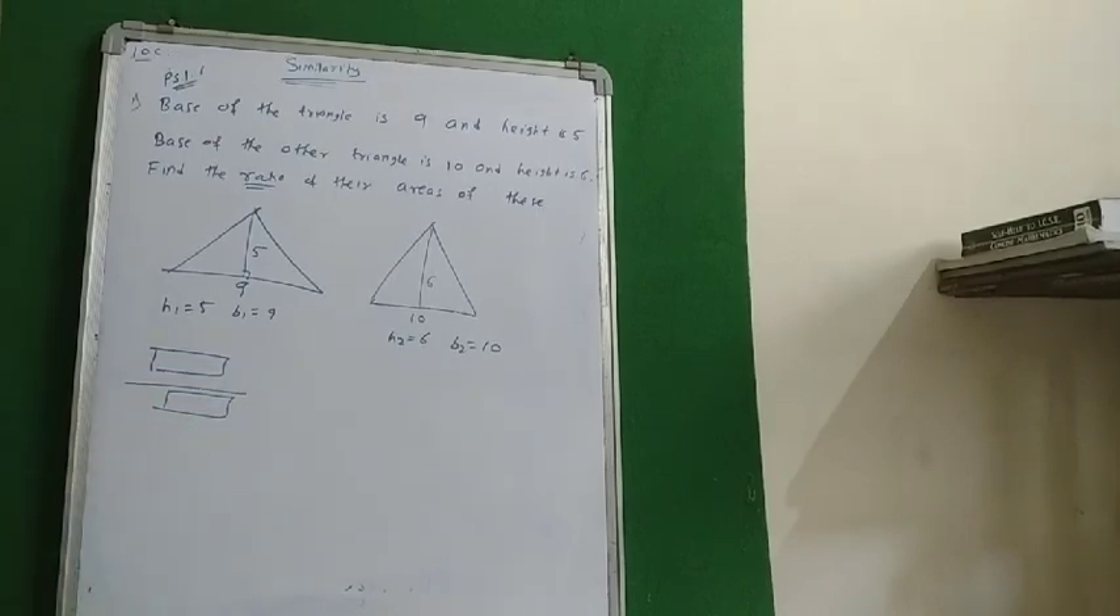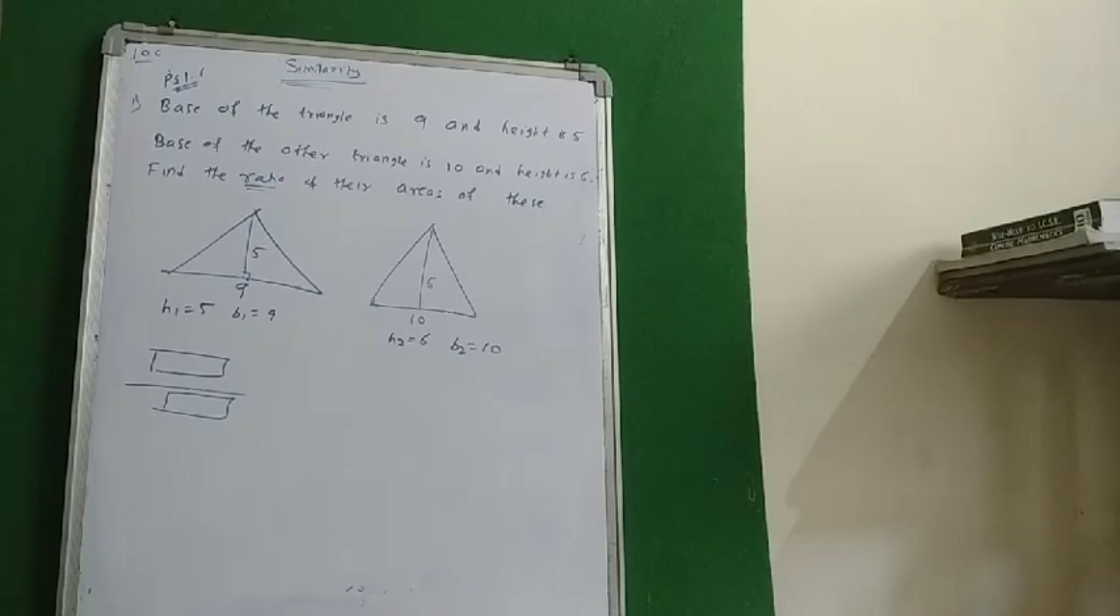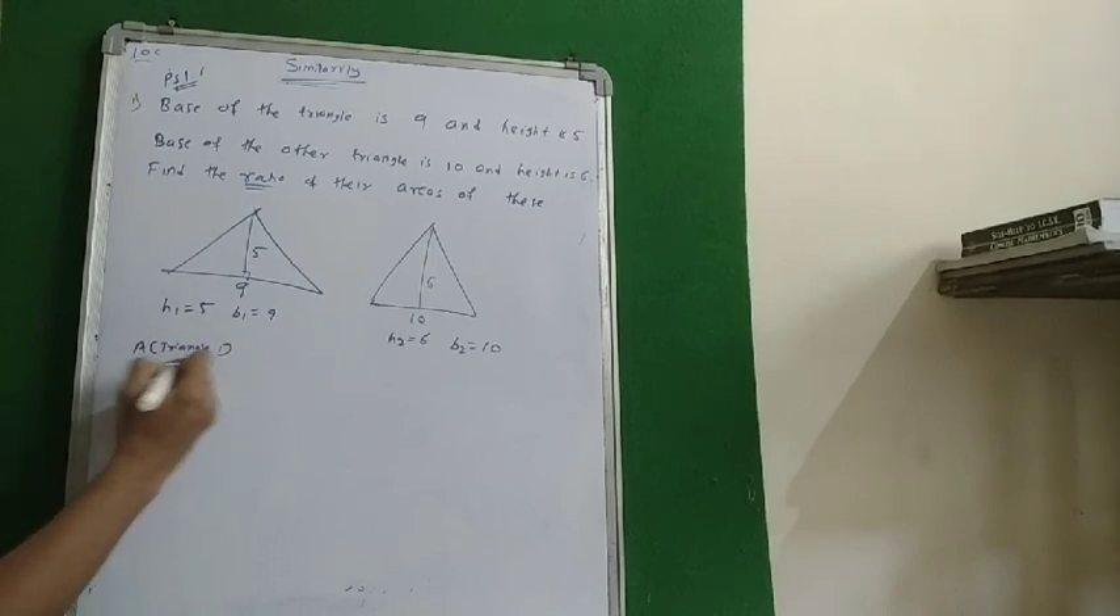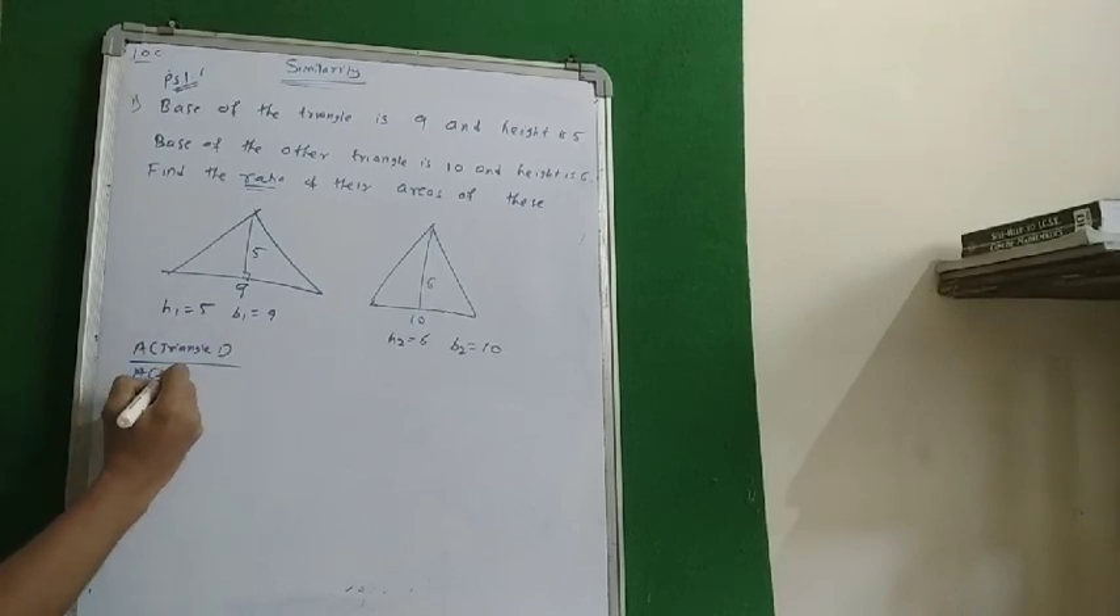Now we are asked to find the ratio. What is ratio? Ratio is nothing but a numerator and a denominator. So we are asked to find the ratio of the areas of these triangles. Now we will find the ratio of the areas, that is area of the first triangle upon area of triangle 2.